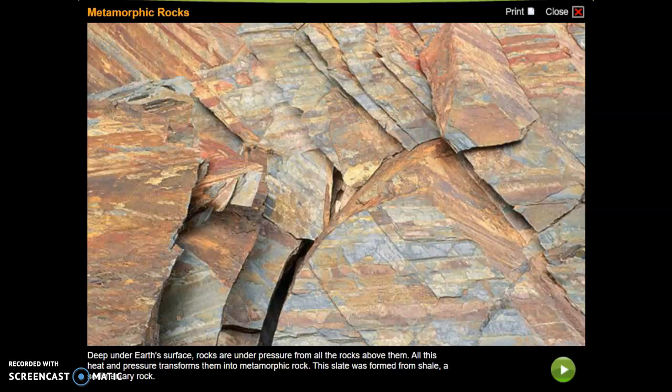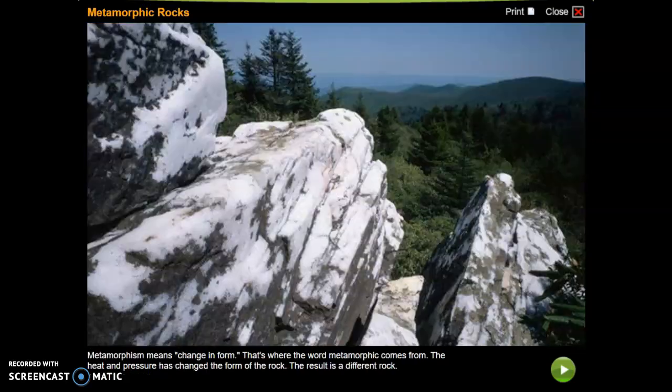This slate was formed from shale, a sedimentary rock. Metamorphism means change in form — that's where the word metamorphic comes from. The heat and pressure has changed the form of the rock. The result is a different rock.